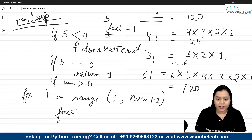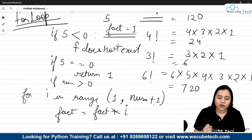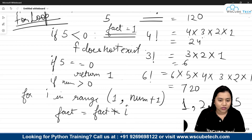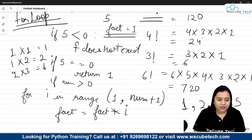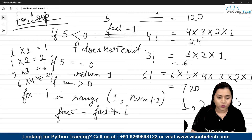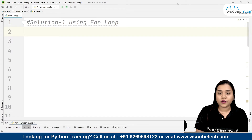We take a variable 'fact' initialized to 1. We don't initialize it to 0 because multiplying any number by 0 would make the result 0. Inside the loop, we write: factorial = factorial multiplied by i. So for number 5, i goes 1, 2, 3, 4, 5 — giving us 1 × 1 = 1, × 2 = 2, × 3 = 6, × 4 = 24, × 5 = 120.